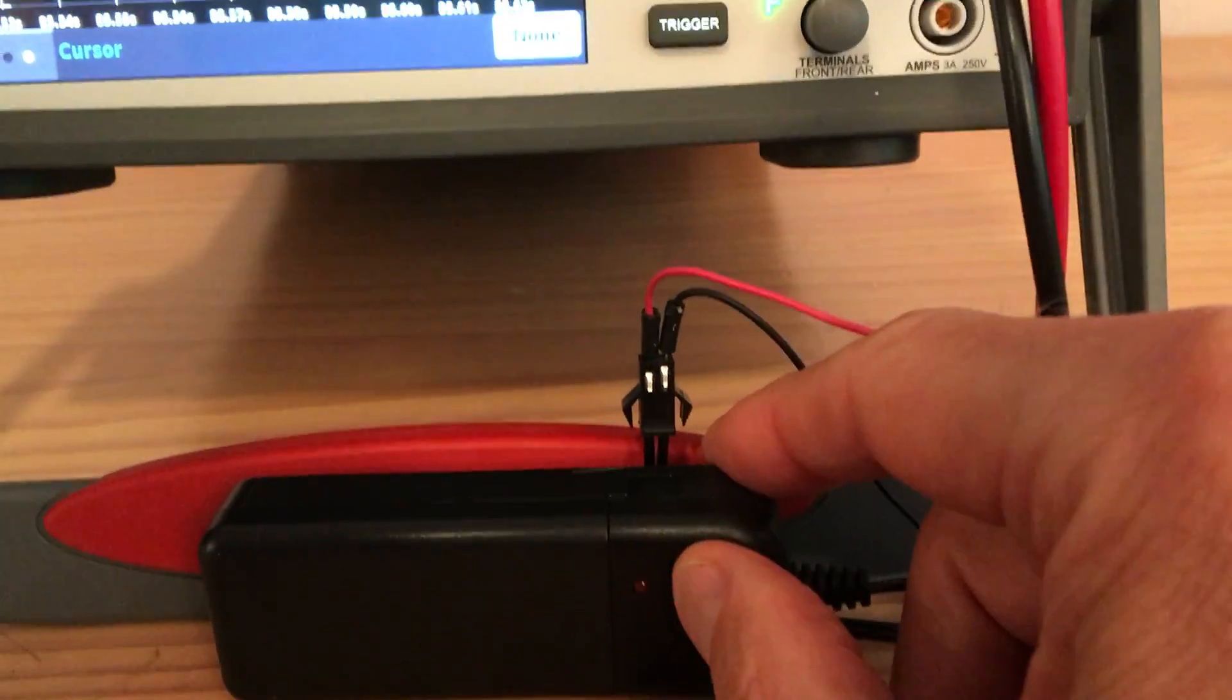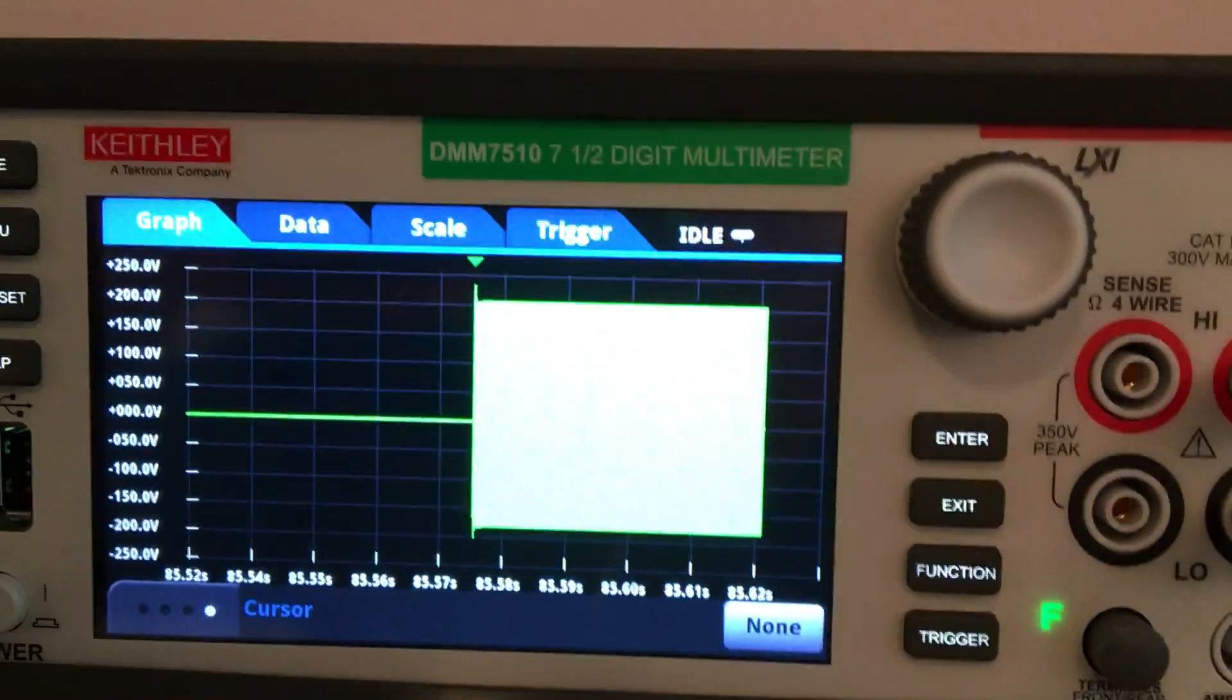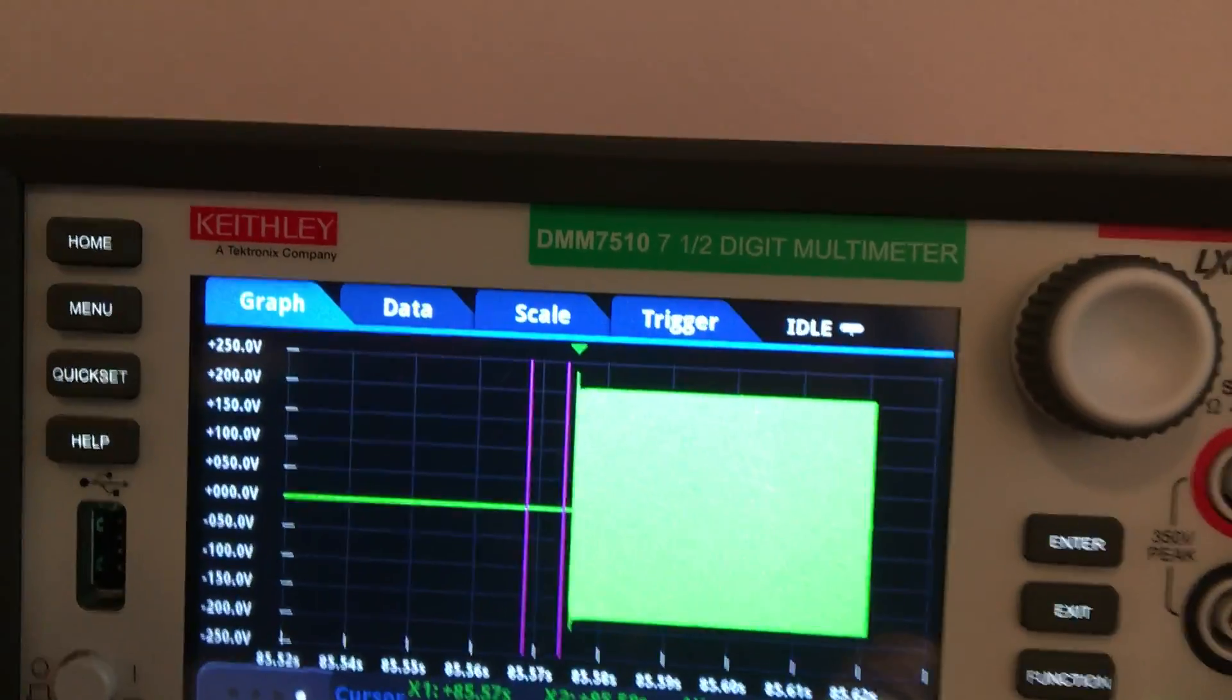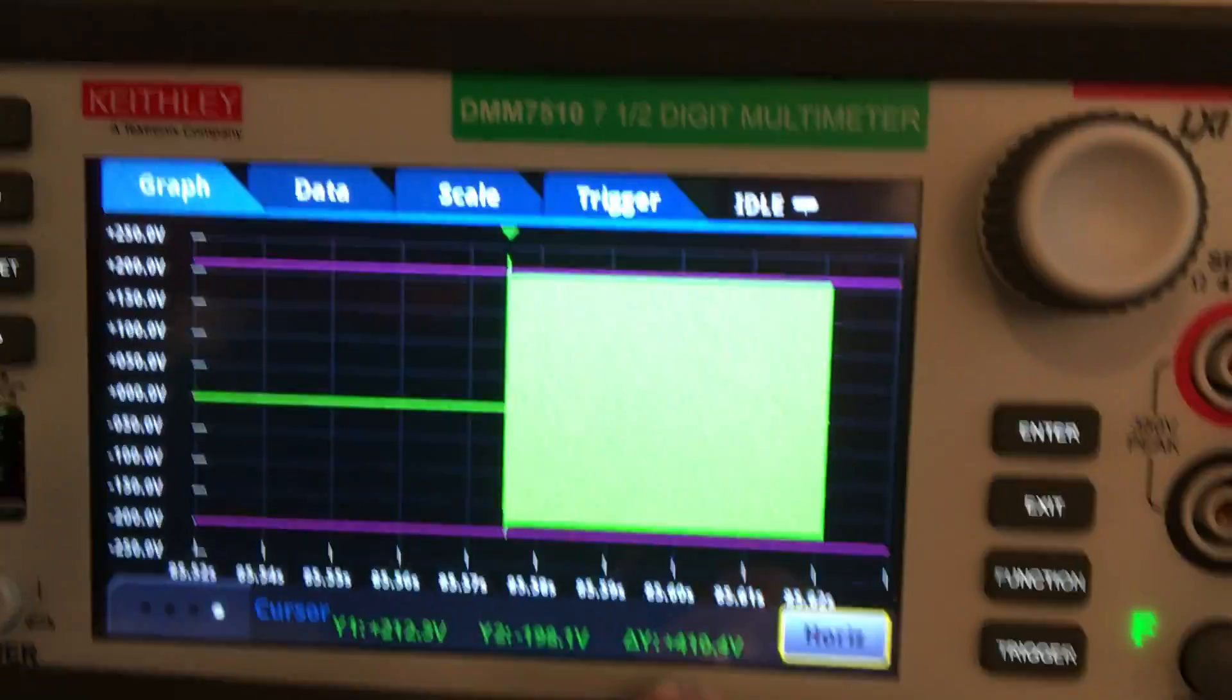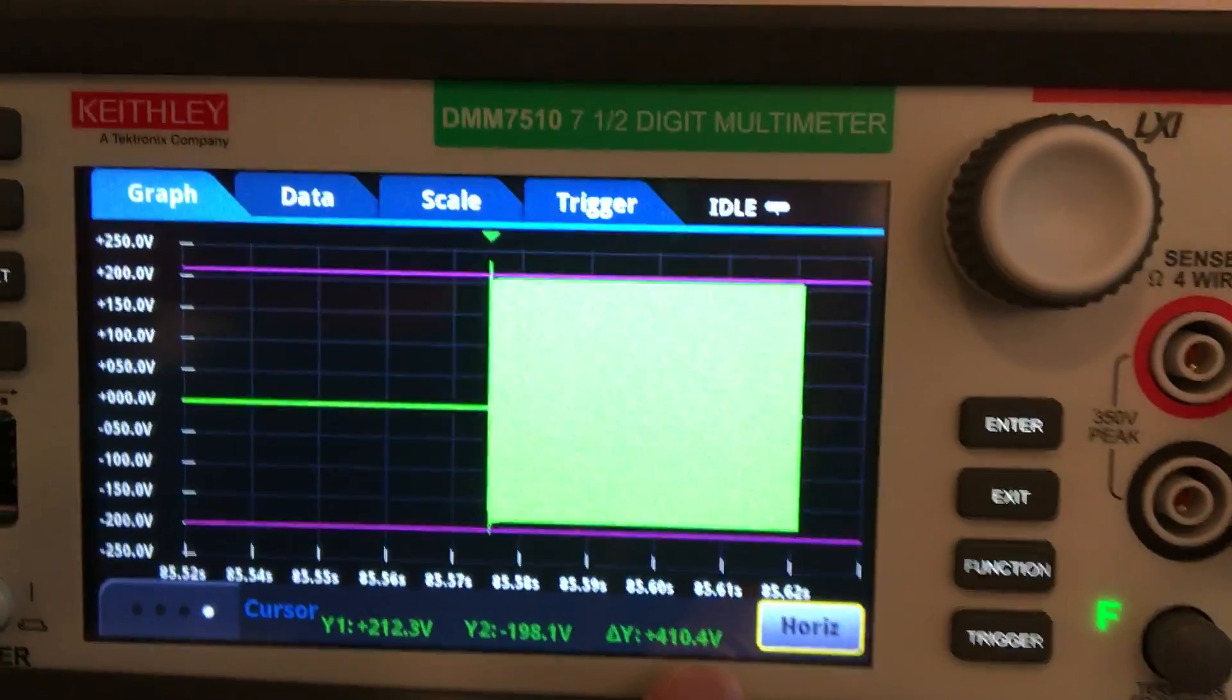I'm going to turn that off now for safety. Doing a quick measurement with the cursors of the 7510, we can see that the voltage is over 400 volts.